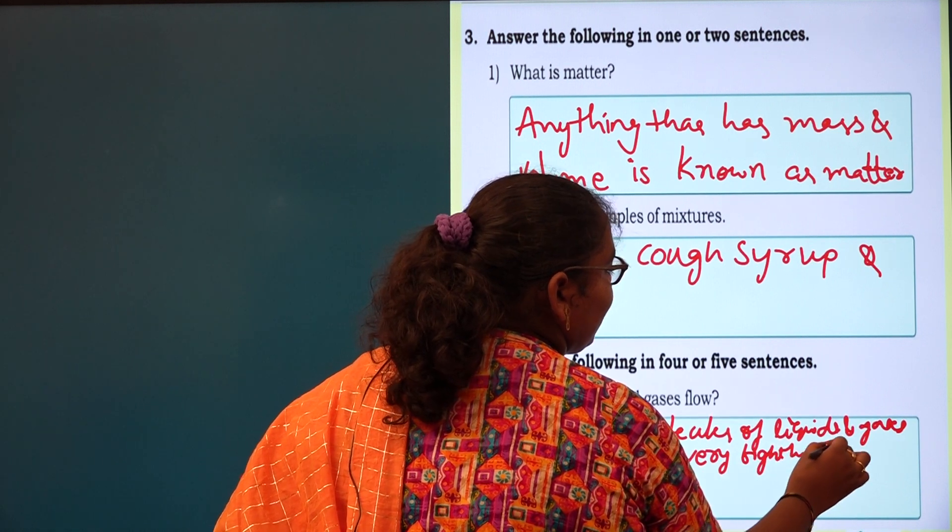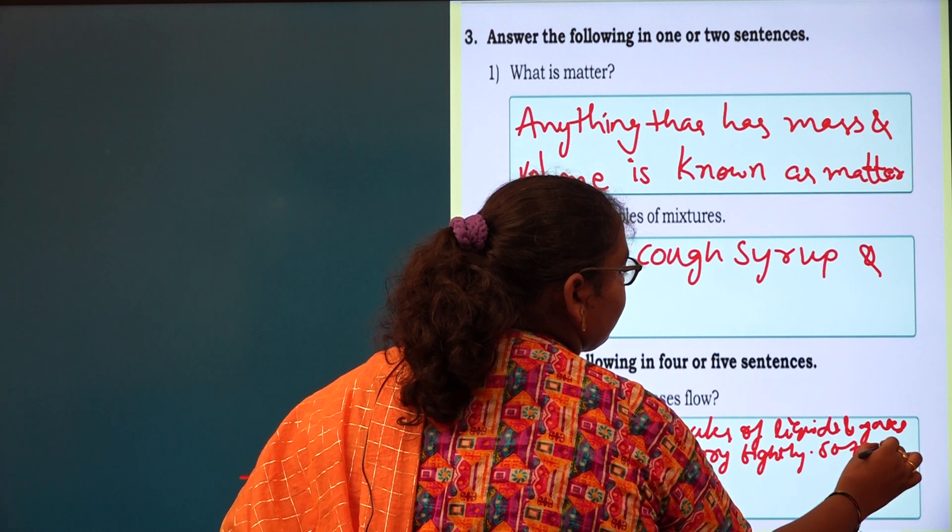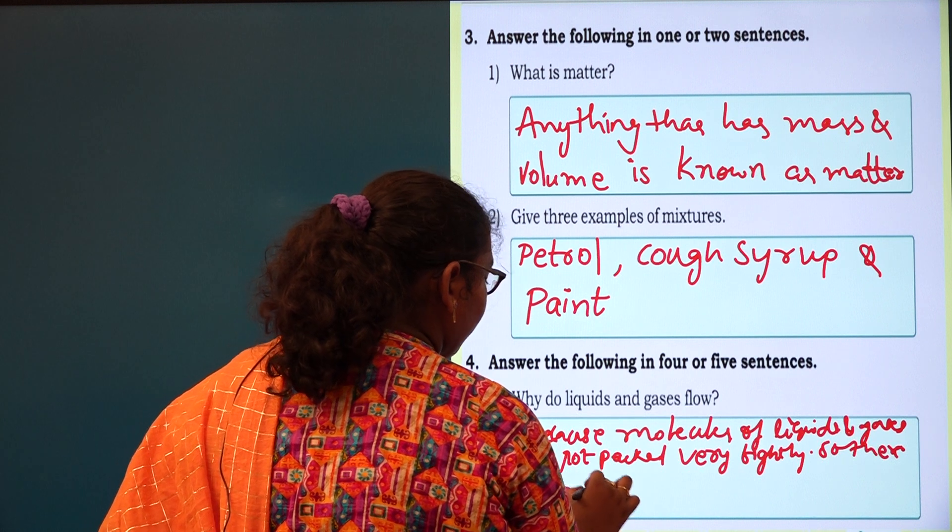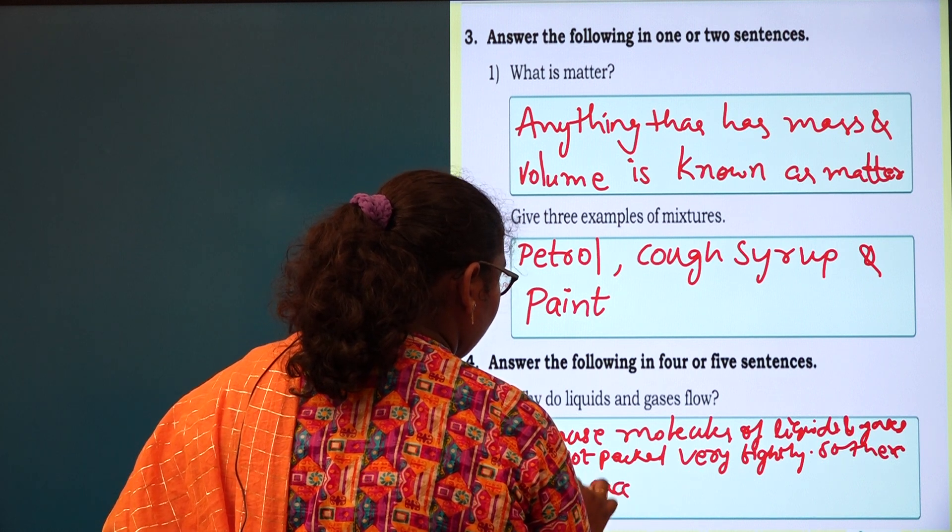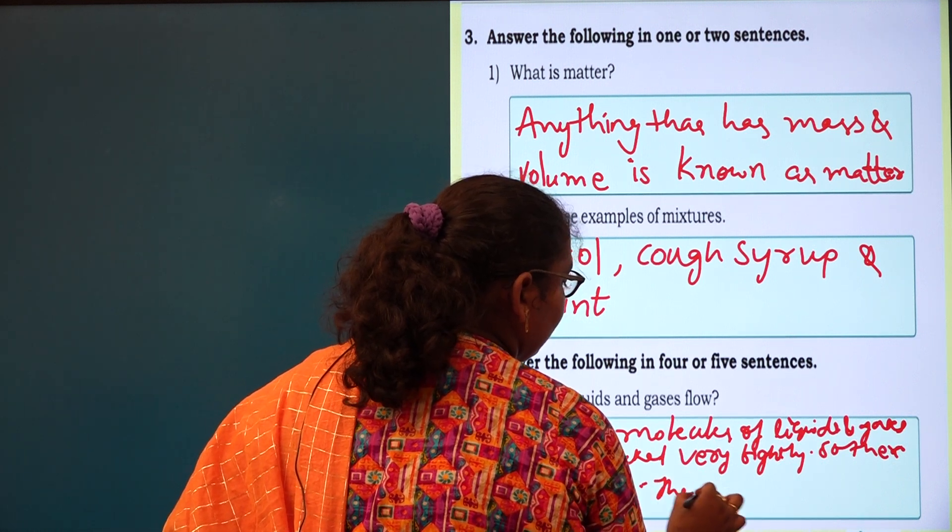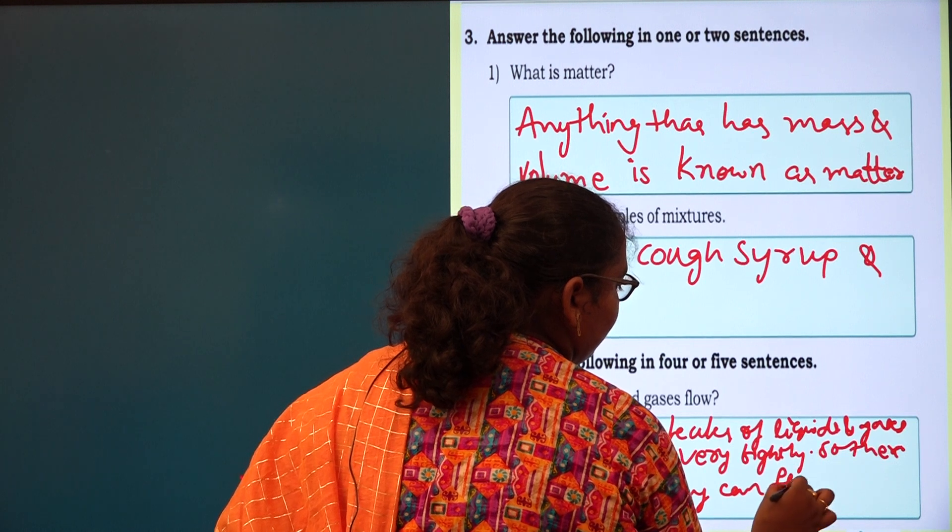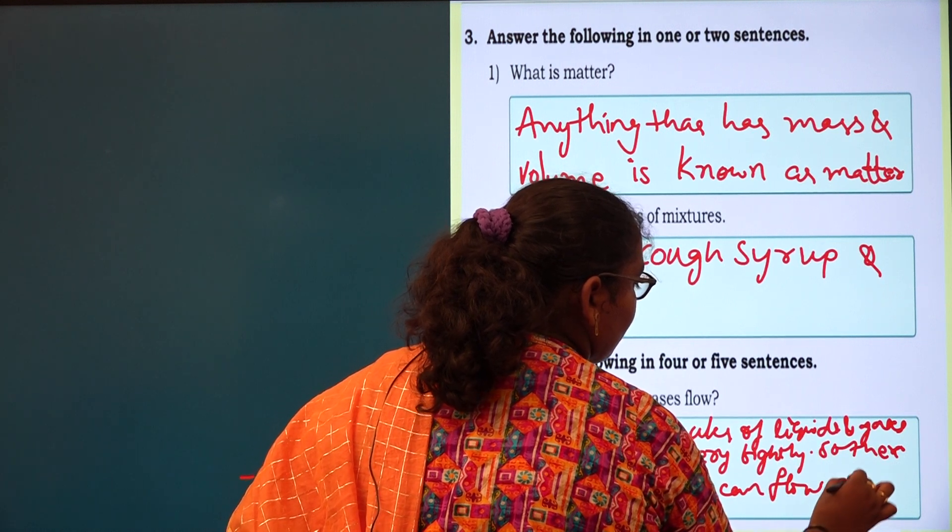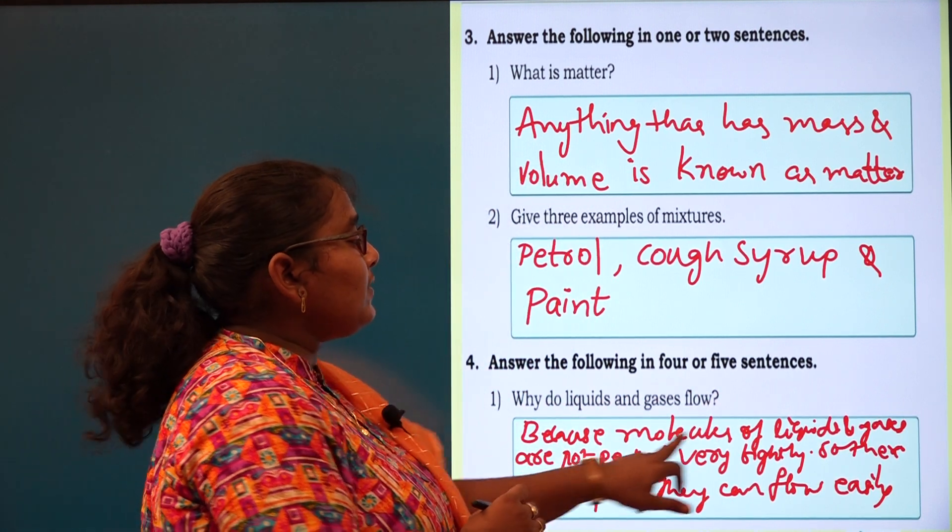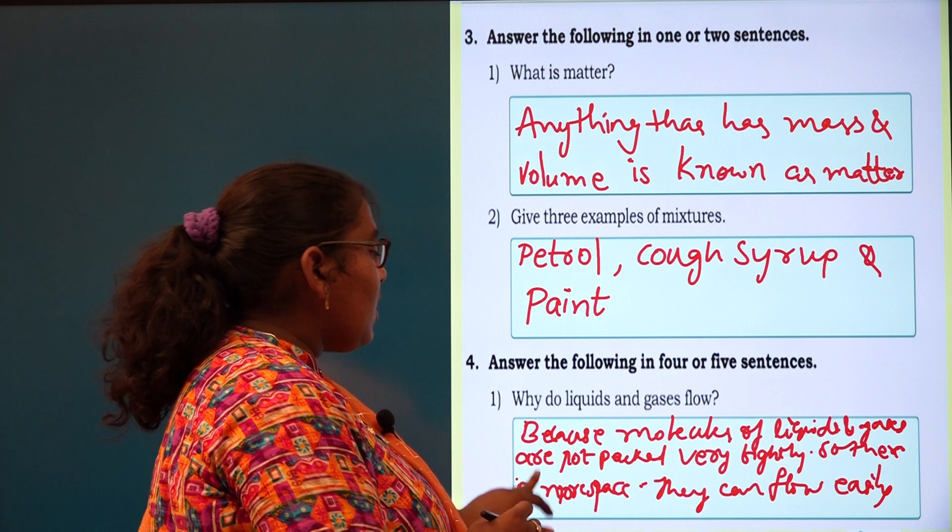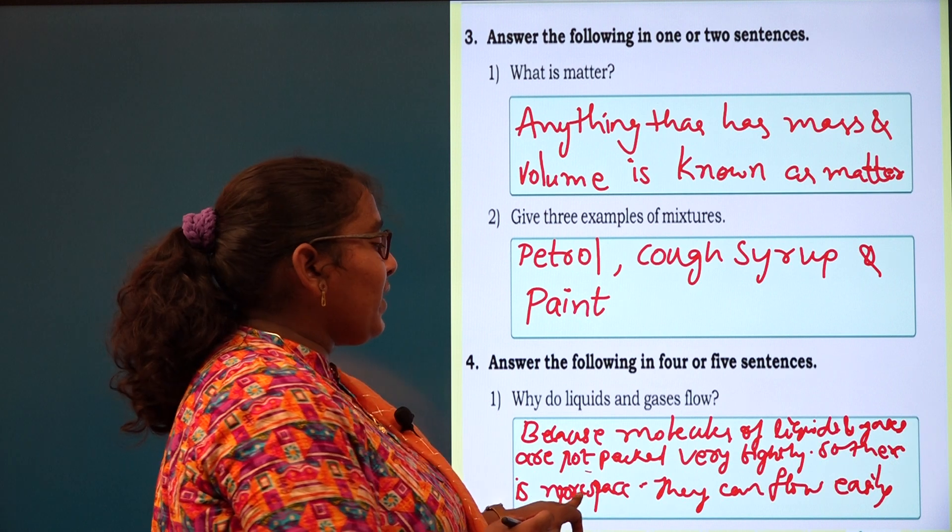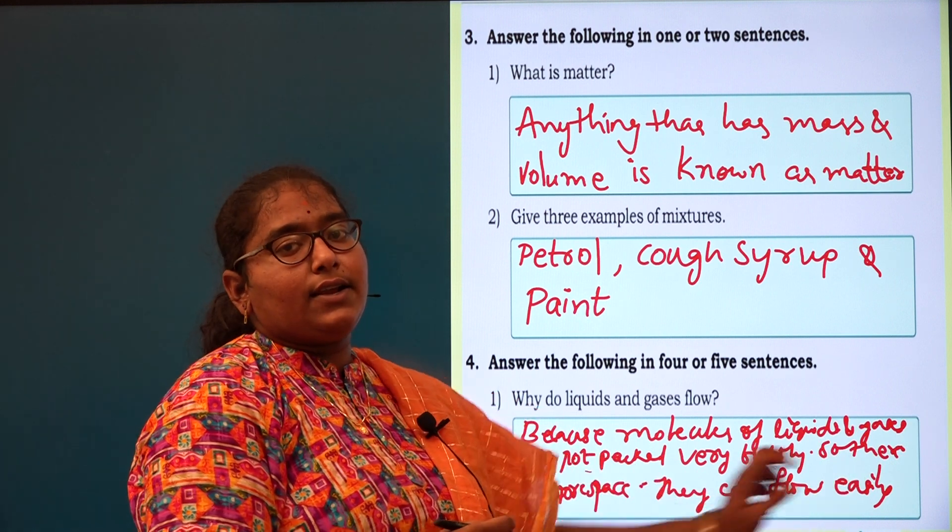So there is more space. They can flow easily. Why do liquids and gases flow? Because molecules of liquids and gases are not packed very tightly, so there is more space. They can flow easily. Thank you.